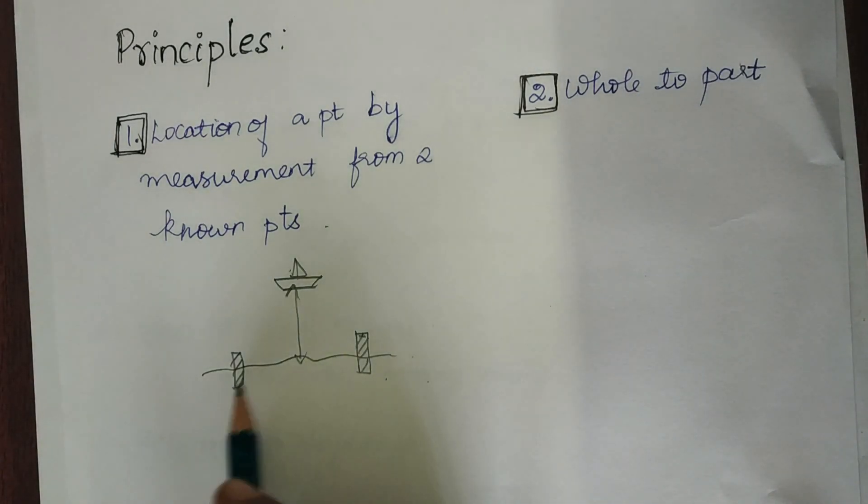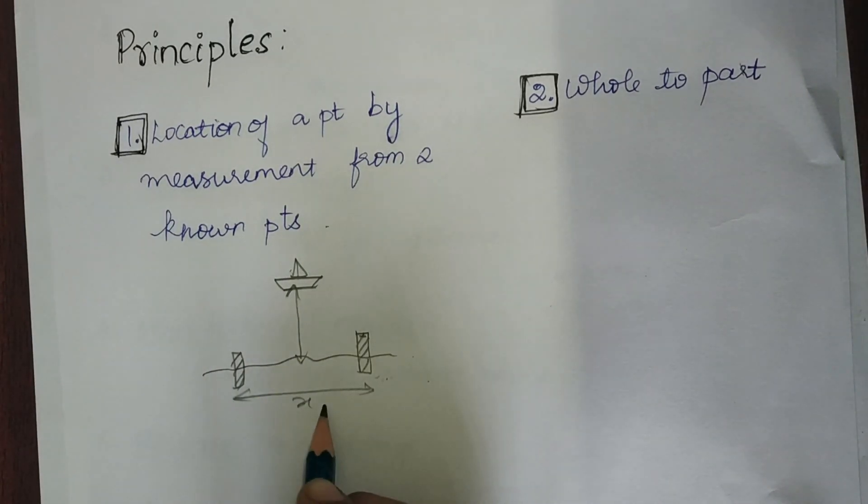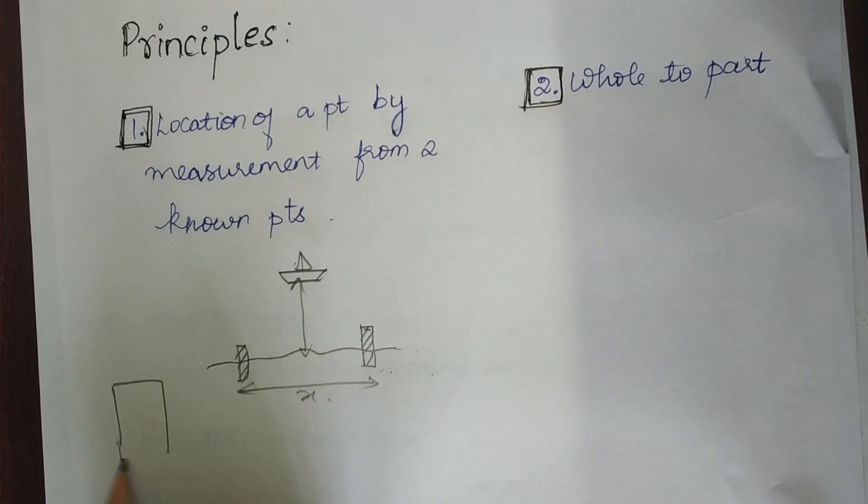You establish two control points and find the distance between them - say it is x meters. You convert that into a scale and plot it on paper as A-B, plotting the distance in some scale.